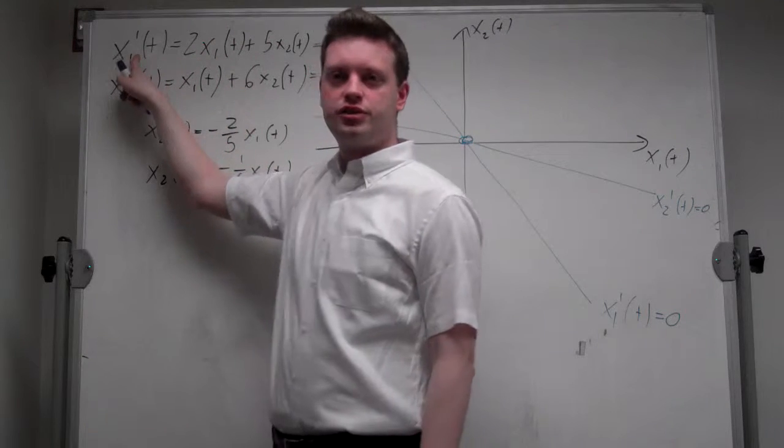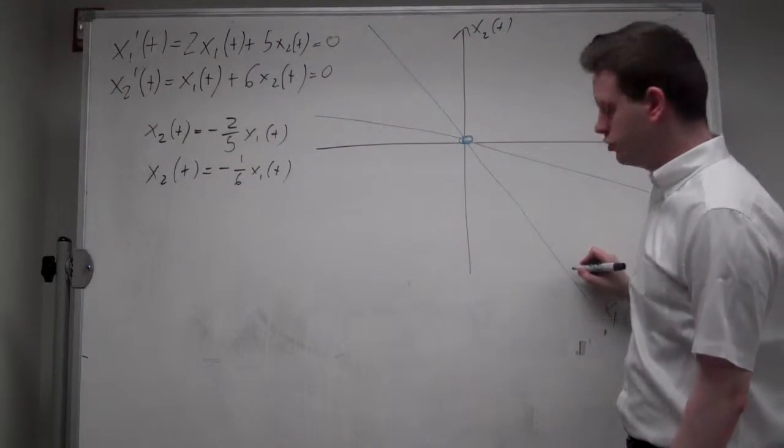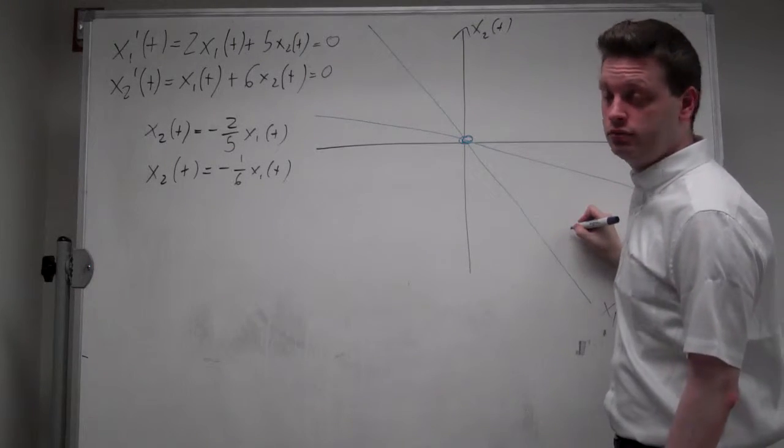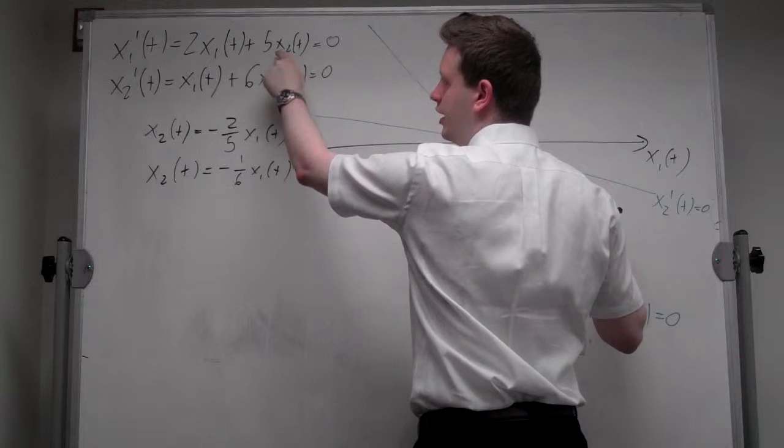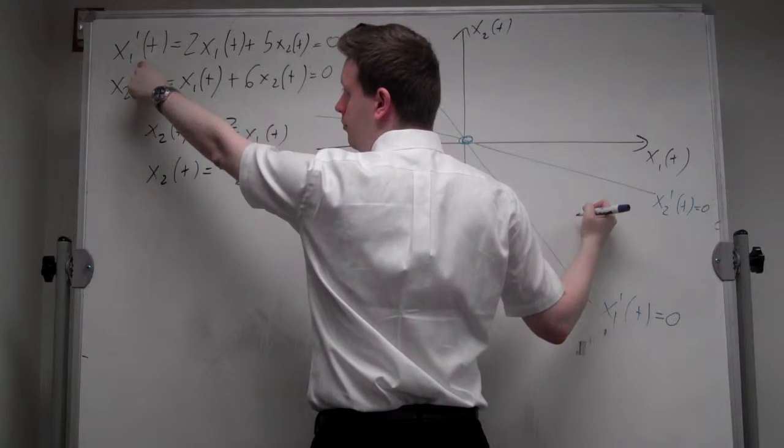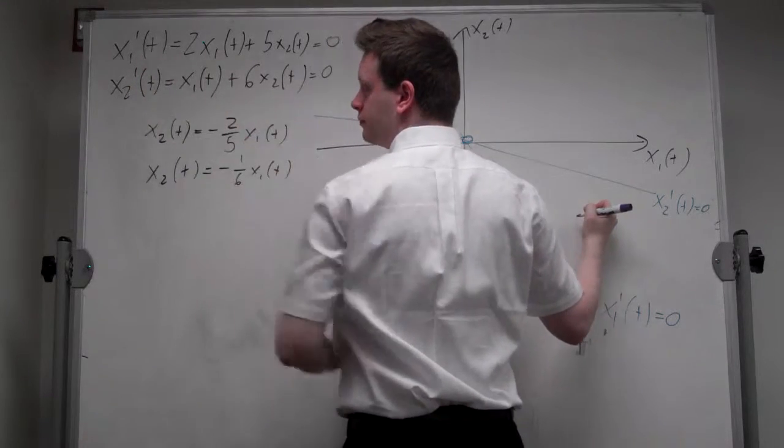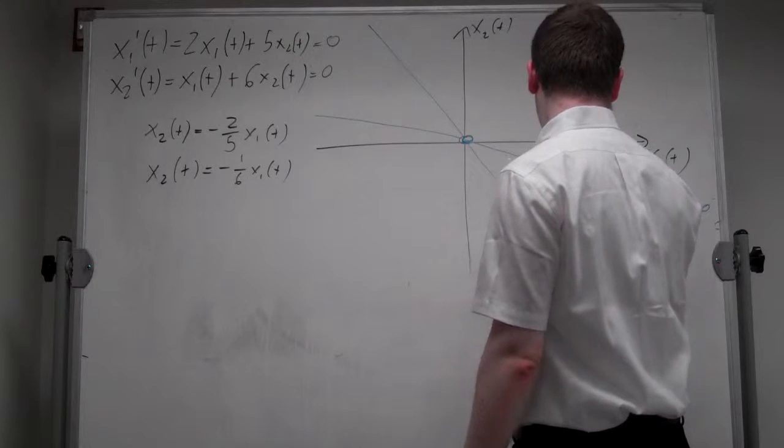So, let's look back at this equation. We assume this equation is equal to zero. And now let's just increase x2. So we move vertically up. If we move vertically up, this expression was equal to zero. Now we increase x2. That means x prime of 1t will be positive. So that means we'll move to the right.